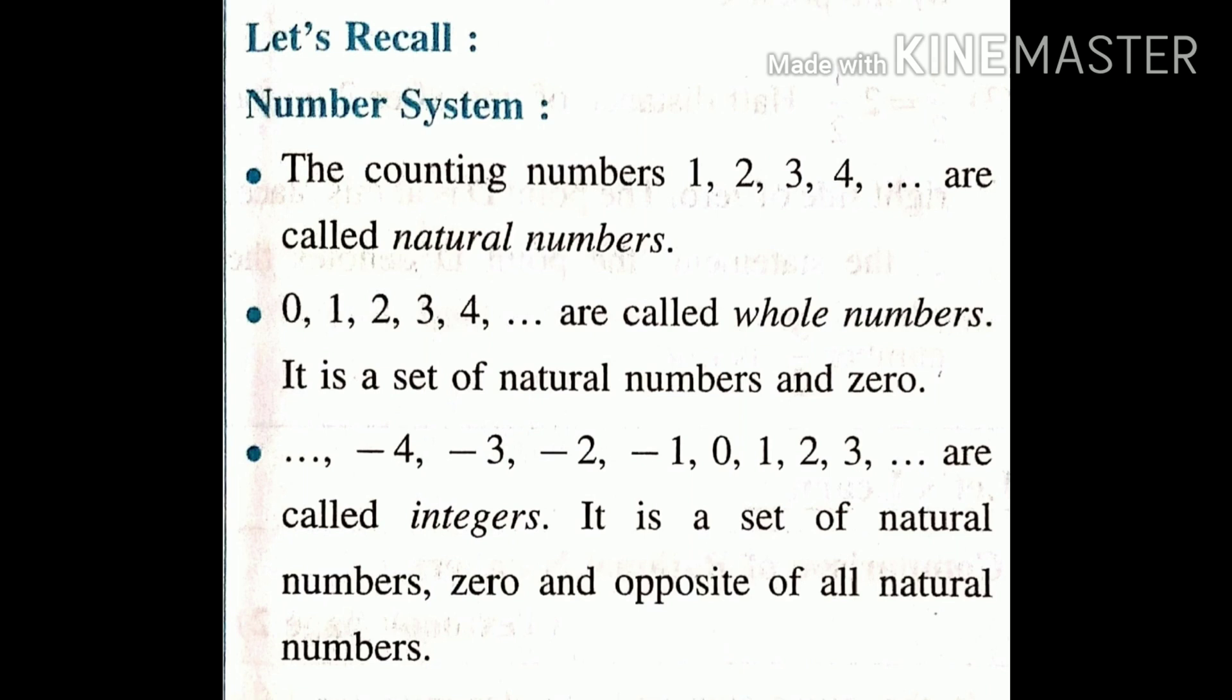Second type: whole numbers. 0, 1, 2, 3, 4, and so on are called whole numbers. It is a set of natural numbers and 0. All natural numbers and 0 together are known as whole numbers.